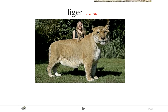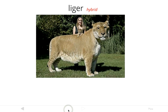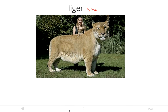If the liger could reproduce, then the lion and tiger would be considered the same species — but they can't, so they're not. Interestingly, it has to be a male lion and a female tiger to produce a liger; a female lion and a male tiger would produce a different-looking organism called a tiglon. Ligers are actually the biggest of all land cats — it's remarkable that a lion and tiger can produce an offspring larger in size than either of them.